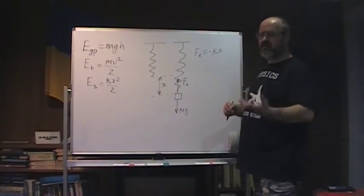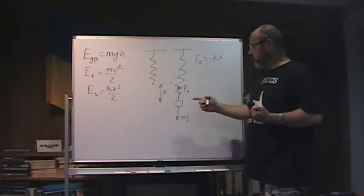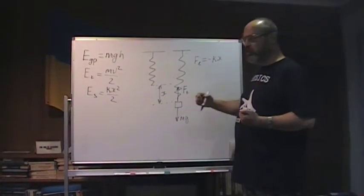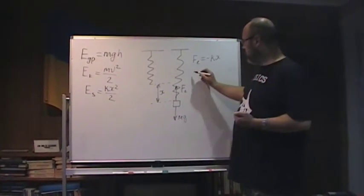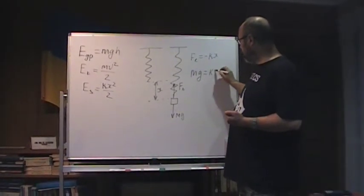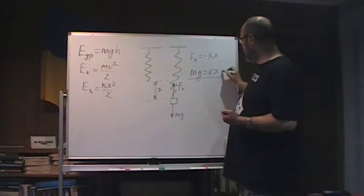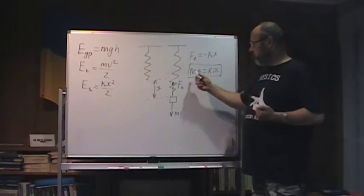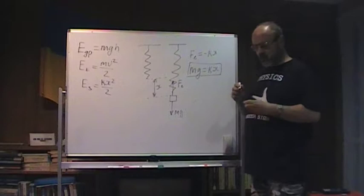When we look at the magnitude and object is at rest, we can write that Mg equals Kx. We will be using this equation later on, because force down exactly equals force up.